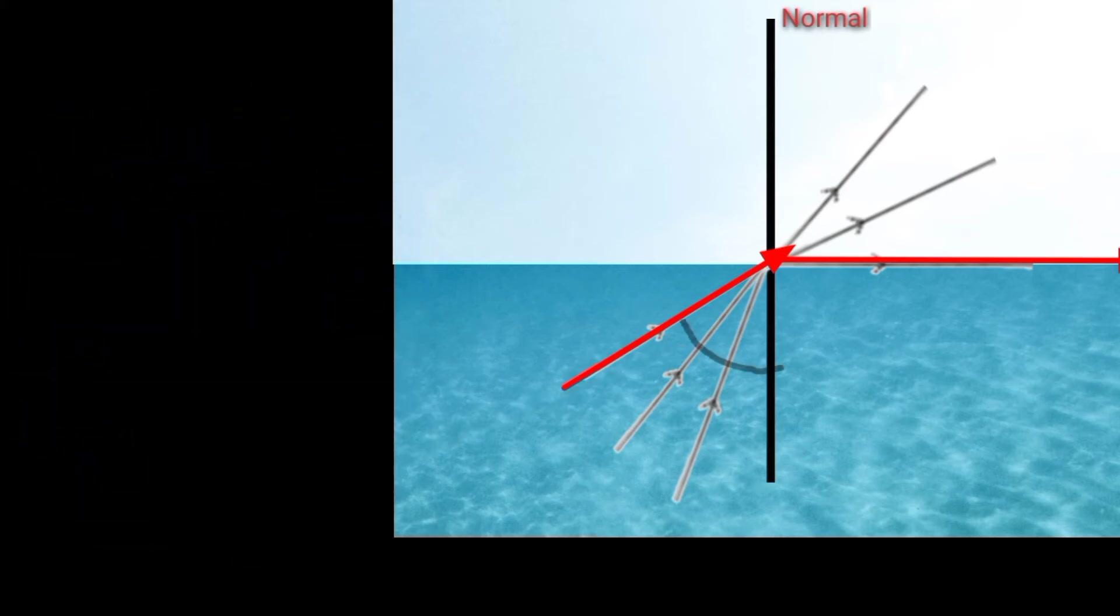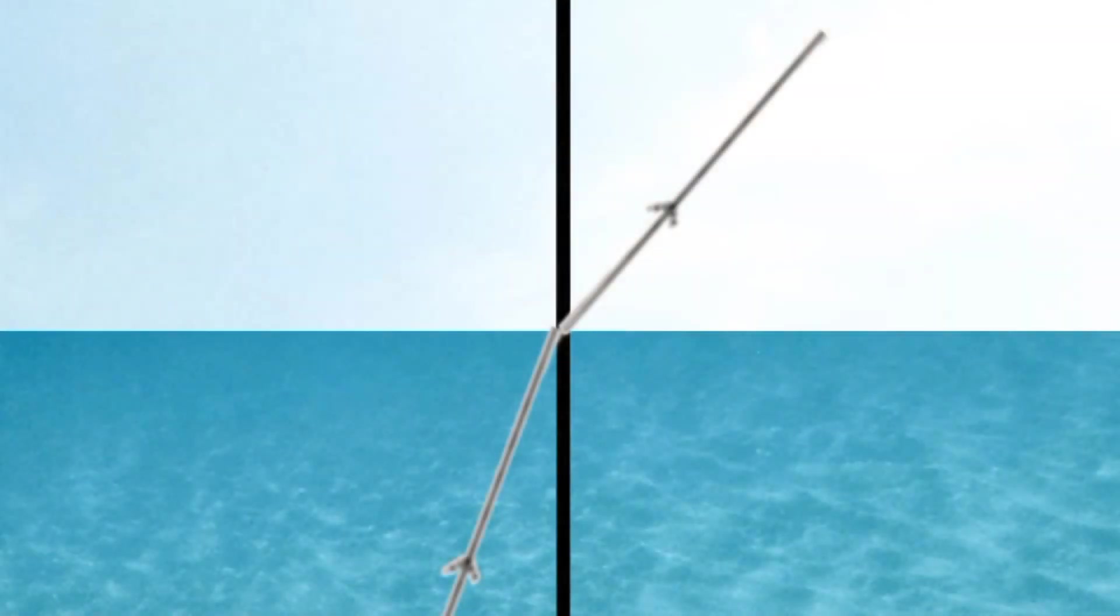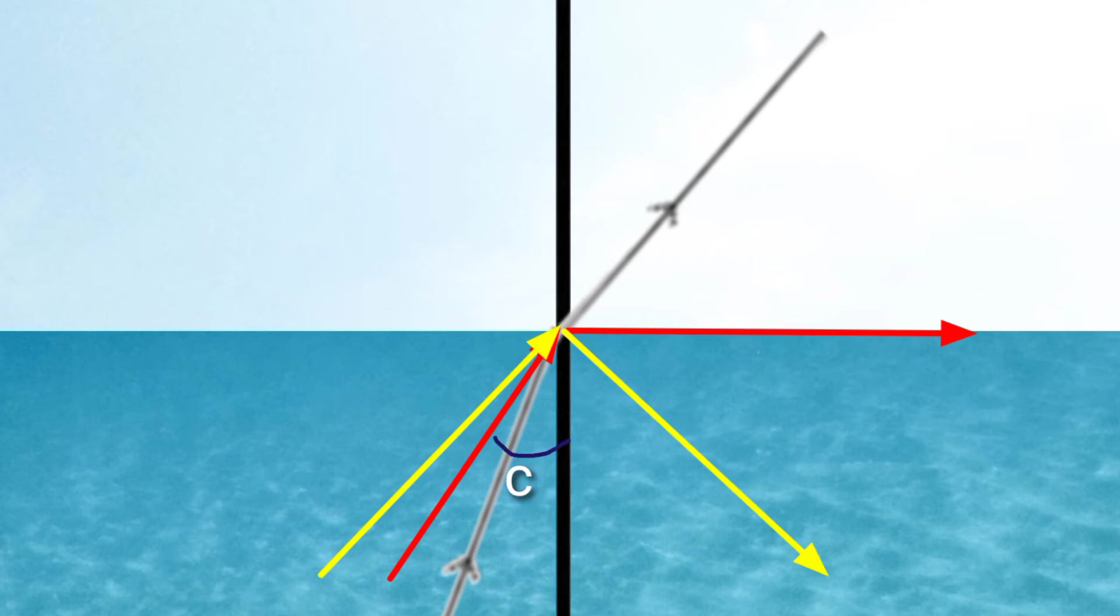What happens if the angle of incidence is greater than the critical angle? When the angle of incidence is greater than the critical angle, the light ray gets reflected again into the same medium. At the interface, this phenomenon is called total internal reflection.